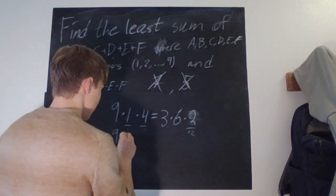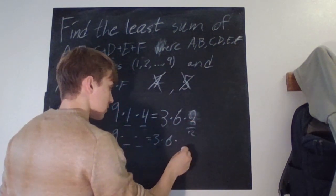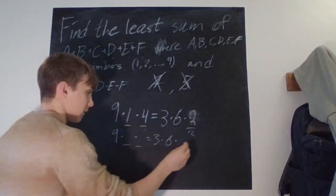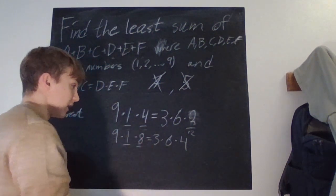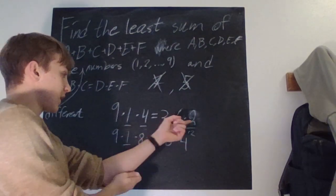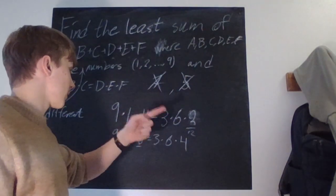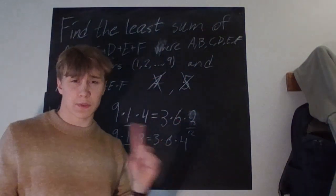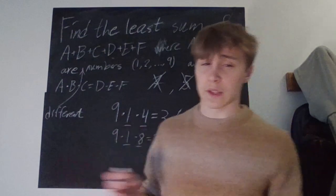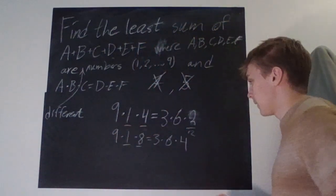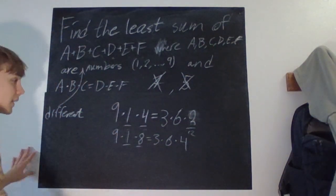Another option: instead of two, we can use a four, which works because then we have one and eight. So four and one times eight also works. We can't use three, five, or seven. If we put eight, then something times something must equal 16, and the only options would be four and two — but that gives eight, not 16. So we've exhausted all cases with nine.